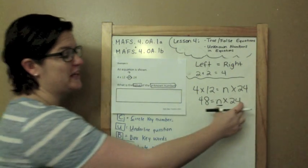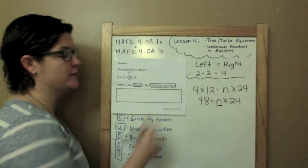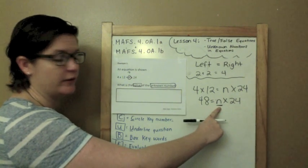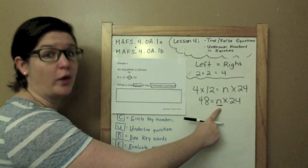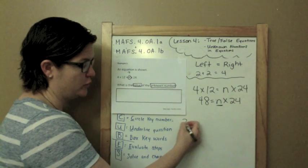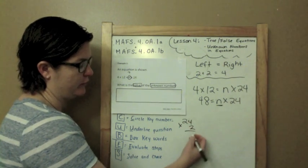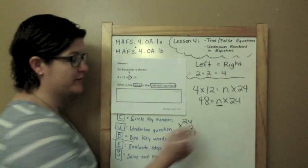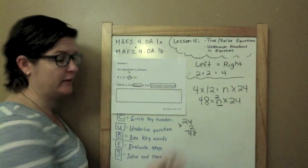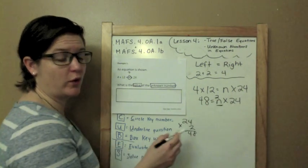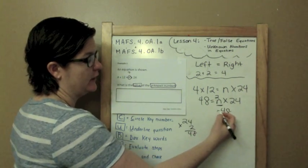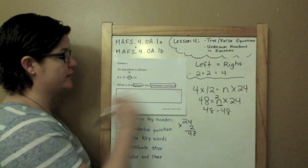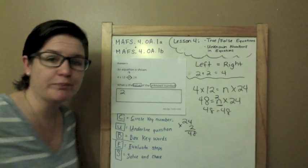Let's plug in numbers. Well, 1 times 24 would just be 24. So let's try 2. 4 times 2 is 8, 2 times 2 is 4, 48. Oh that works! So if we plugged in 2 for n, 2 times 24 equals 48 and 48 equals 48. So that is true. What is the value of the unknown number? 2.